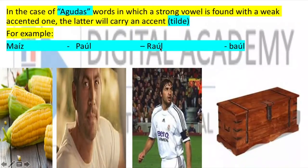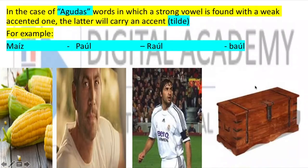In the case of agudas words in which a strong vowel is found together with a weak accented vowel, the letter would carry an accent tilde. For example: maíz, Raúl, baúl. In English his name is Paul, but in Spanish it is Raúl.